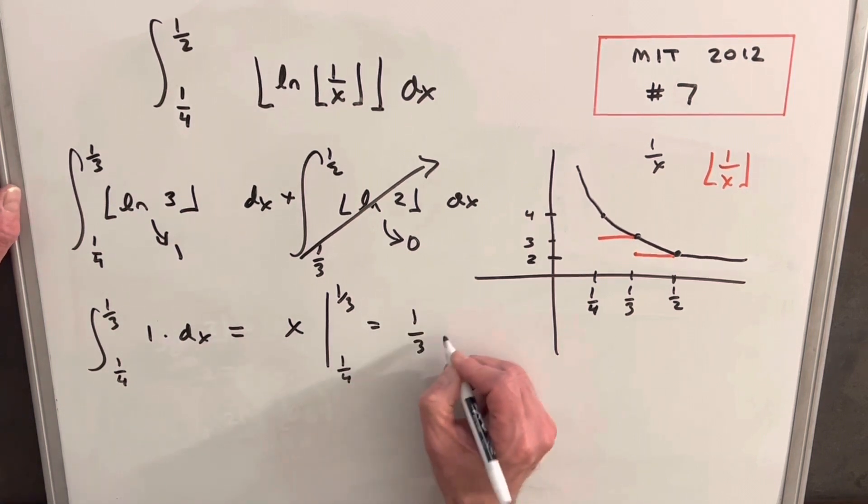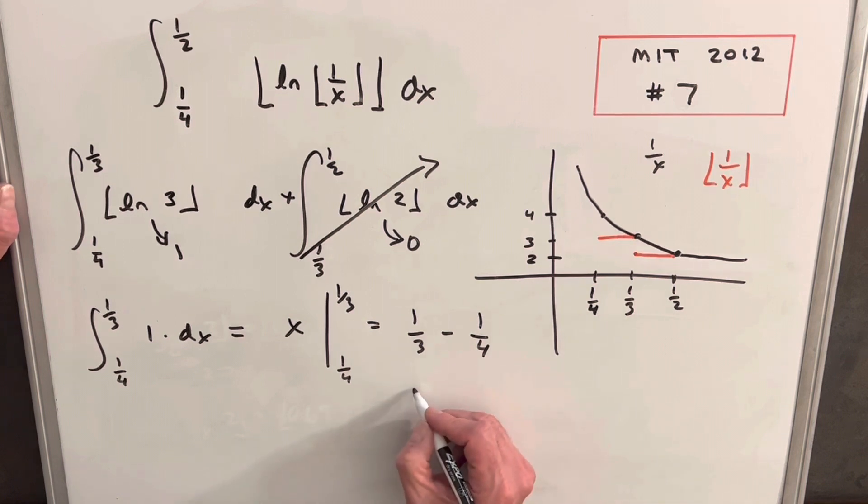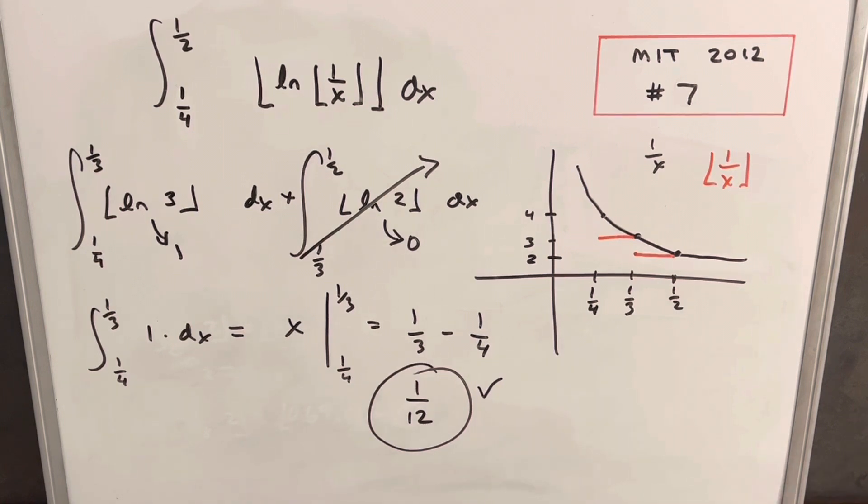And we just have to figure out what is one-third minus one-fourth, get a common denominator, and it ends up being our final solution of just one-twelfth. So that's it, MIT 2012. Thanks for watching. Please like and subscribe. Have a good day.